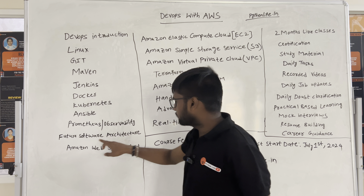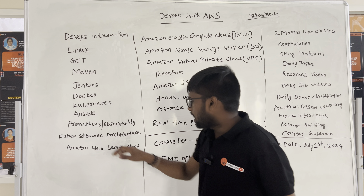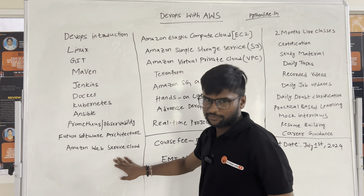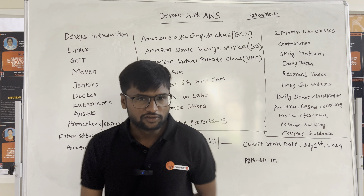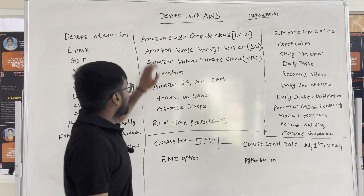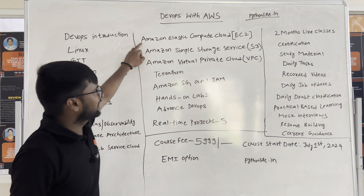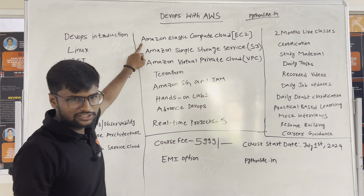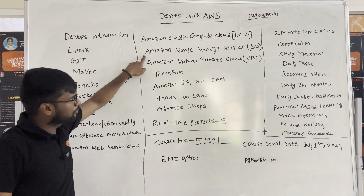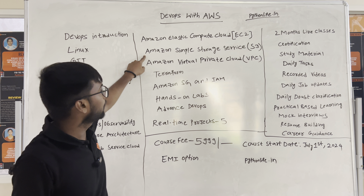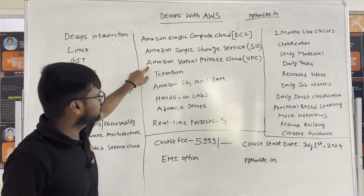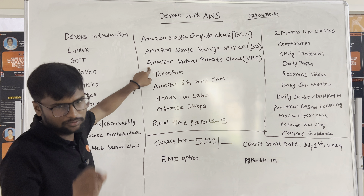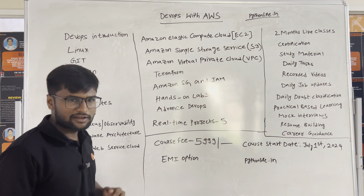Then we cover Future Software Architecture and Amazon Web Service Cloud — including Amazon Elastic Compute Cloud EC2, Amazon Simple Storage Service S3, Amazon Virtual Private Cloud VPC, and Terraform.